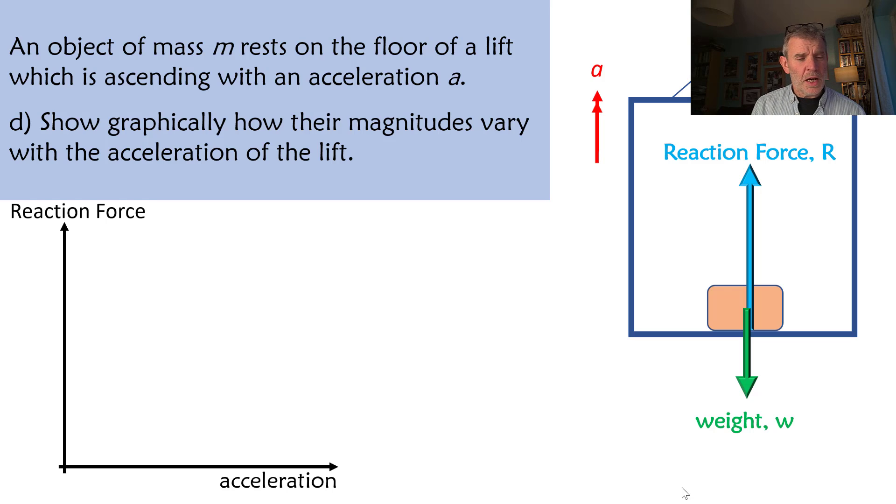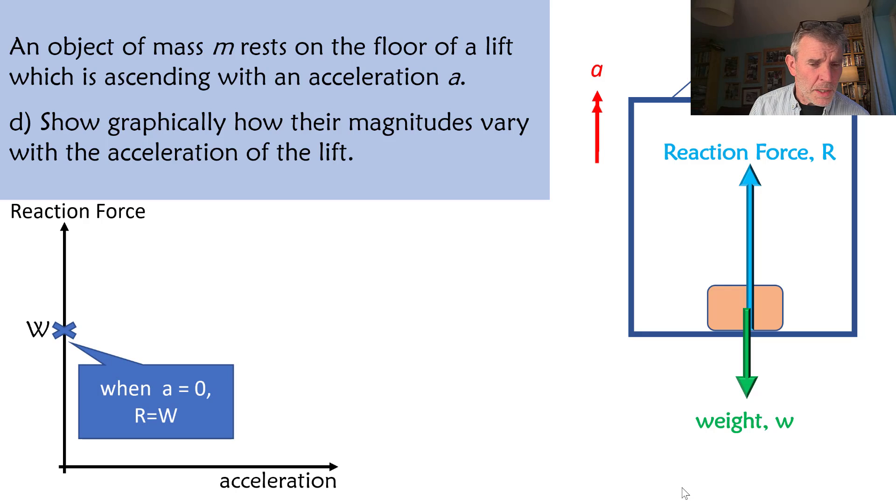So if we plot our axes, reaction force on the y-axis, acceleration on the x-axis, the first point that we can make on our axes is the condition when acceleration is zero. And we've already said that when acceleration is zero the reaction force is going to equal the weight. We can mark that on the axis there and label it W.